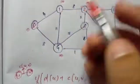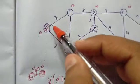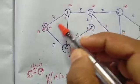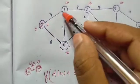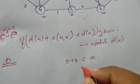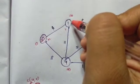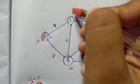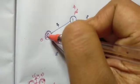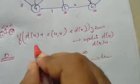From vertex 0, we call it v1. d(u) is 0, plus c(u,v) which is 4, gives 0 plus 4. This is less than d(v), which is infinity. So 4 is less than infinity — this is true. When true, we update d(v) to d(u) plus c(u,v), so d(v) becomes 4. This distance is updated.